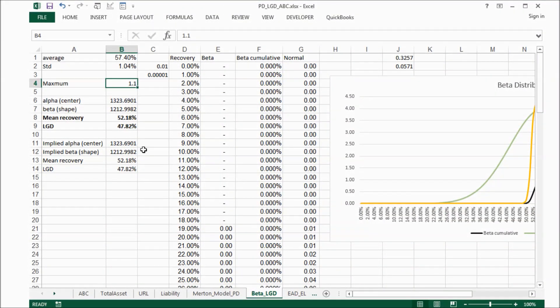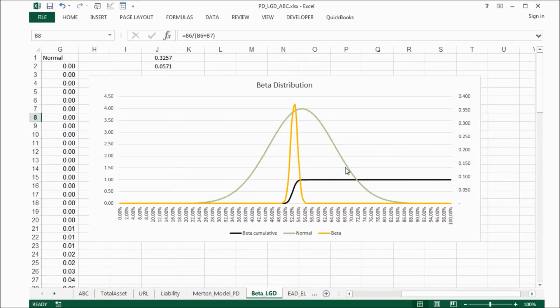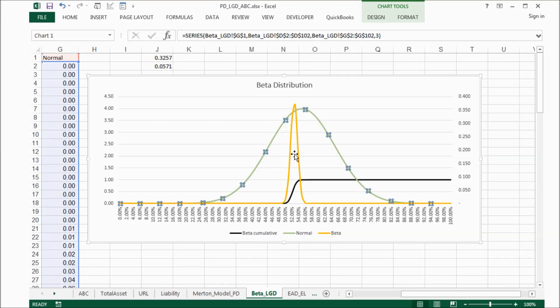Now, we go back to our spreadsheet. Based on the historical data, the average is 57.4 and the standard deviation is 1.04%. We put it here and then we can calculate implied alpha by this formula and we can calculate implied beta with this formula. And also because we have bound, the maximum is 1.1. If we check the graph, we can see this is normal distribution and this one is our beta distribution. You can see it's very sharp at this point.